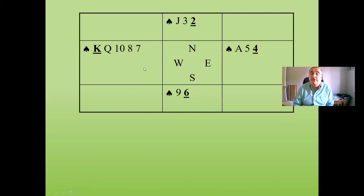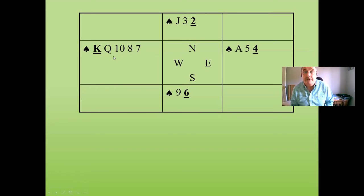Just to clarify: if the jack were in the south hand rather than in dummy, it would be fine to overtake. You would overtake, lead the suit back, and the jack would be trapped because your partner has the queen and ten remaining.